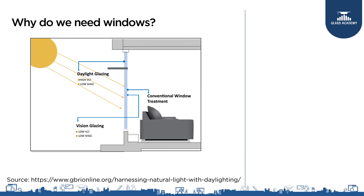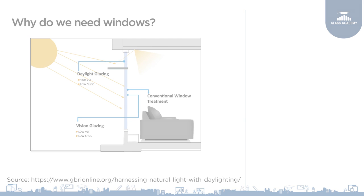So, now we have two panes — the vision glazing and the daylight glazing. The daylight glazing can have higher visual transmittance because it will probably not give us glare as compared to the vision glazing, and it can bring daylight which will go deeper into the space. The difference between the two glazings would be that the vision glazing would have a little low visual light transmittance, a good glare control mechanism, and low solar heat gain coefficient. The top glazing, which is the daylight glazing, can have high VLT, but still should have low solar heat gain coefficient and may not need high glare protection.